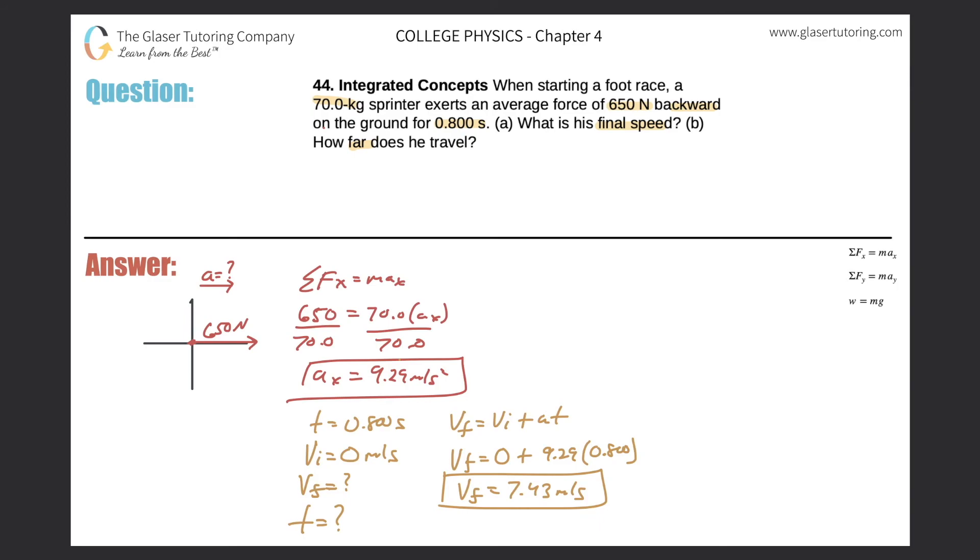So how far does he travel? I don't know why I wrote time down here. What we are looking for is the displacement in terms of x. So now we just got to think of a formula that we need that relates to known variables. So we can choose this one. The change in displacement is equal to the initial velocity times time plus one half of the acceleration times time squared.